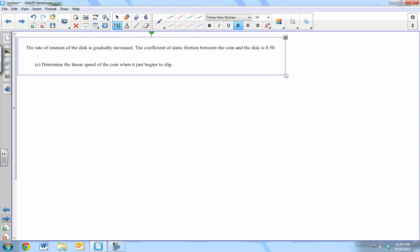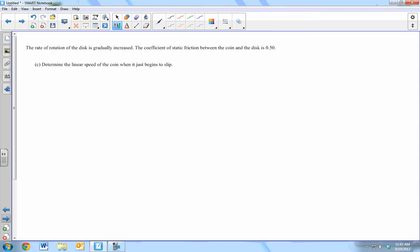Part C says the rate of rotation of the disk has gradually increased. So things are starting to go faster and faster. The coefficient of static friction between the coin and the disk is 0.5. Determine how fast we can go before the coin starts to slip. What type of question is this? It's a forces question. What do we do with forces questions? Free body diagrams. Free body diagram of what? The coin or the disk? The coin. That's the object that we care about. So what's the free body diagram of the coin look like? Gravity.